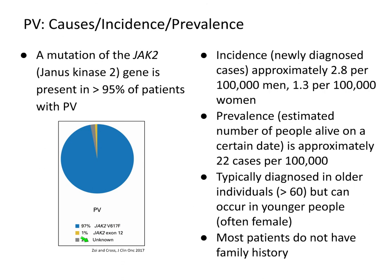JAK2 signals downstream to essentially increase cell proliferation and avoid cell death, which explains the elevated blood counts. PV and the other MPNs are relatively uncommon — less than 5 out of 100,000 people. The prevalence of PV is about 22 out of 100,000, related to the fact that people with PV tend to live for many years with the disease. PV is typically diagnosed in older individuals, over age 60, though it can occur at all ages. There is a specific subgroup of younger women who tend to present with blood clots affecting the abdominal veins.